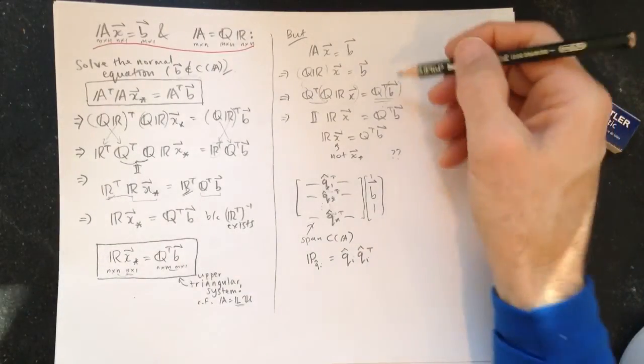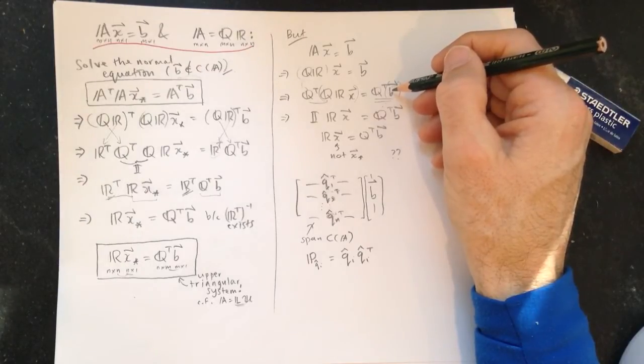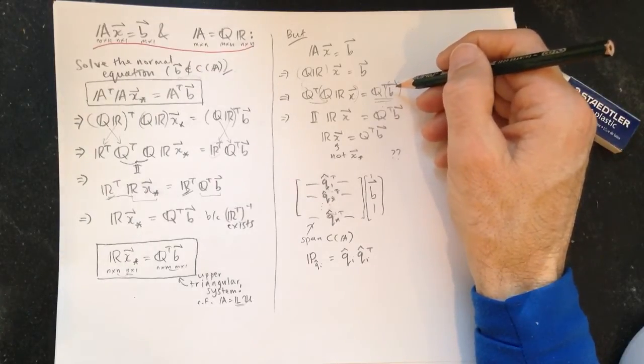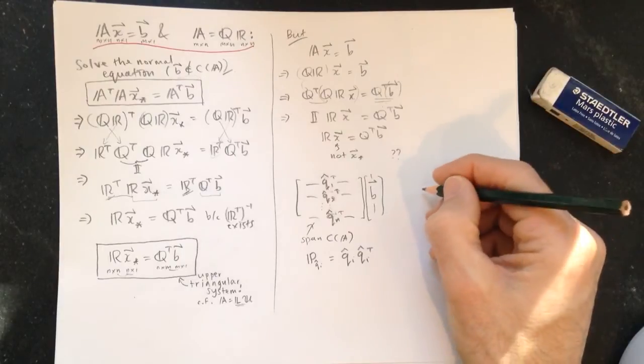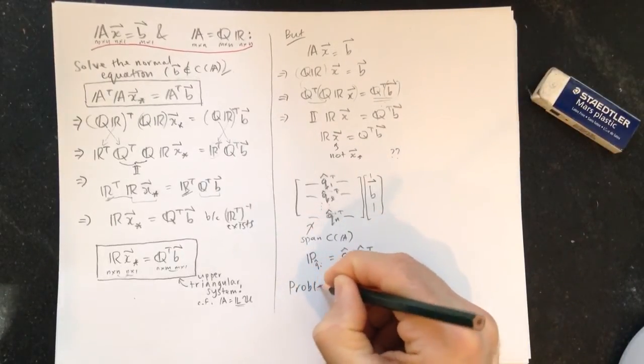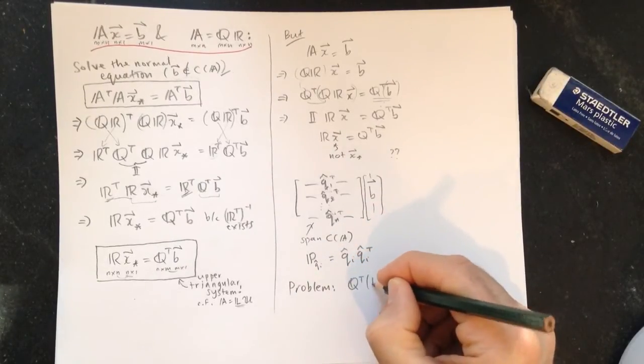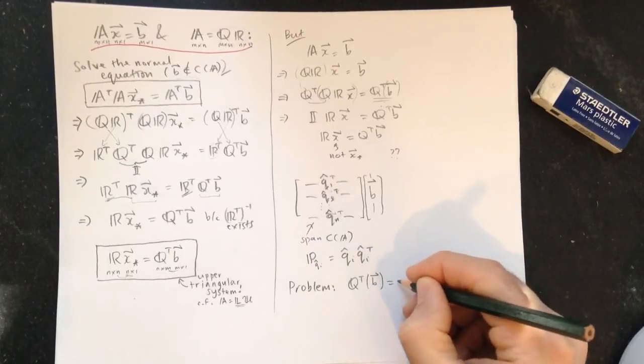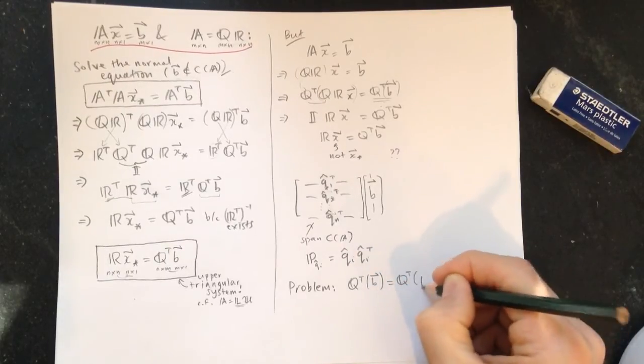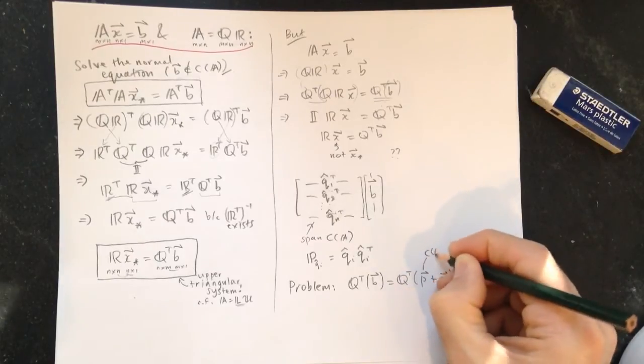So we're already, so we're kind of working on the normal equation. And really, what's going to happen here is any B that's in, any part of B that's in the left null space gets crunched. So if we have, so the problem is this, let's write it like this, Q transpose B, let's write it as our friends, the projected piece plus E, right? So this is in the column space of A.